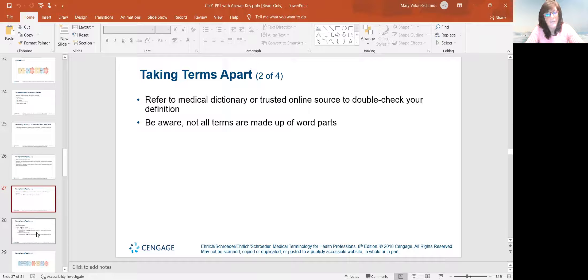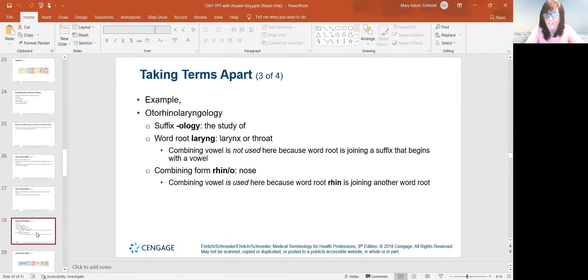You can use a medical dictionary. You've got your phone. But sometimes you're going to get maybe a freak word here and there because not all of these words are made up of word parts, but most of them are. But an example, like otorhinolaryngology. So ology, study of, larynge, pertains to the larynx of the throat. You don't need the combining vowel, that O, because the word root joins a suffix that starts already with a vowel. Laryngology. So we don't have to put larynge O, it's just larynge.